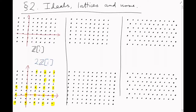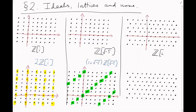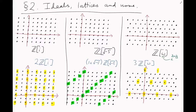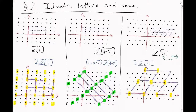Here are some pictures of ideals we've seen before, and for good measure, here's the ideal generated by 3 inside Z[ω], where ω is a complex cube root of 1. You might have noticed a very regular repeating pattern in all of these pictures. Just like our additive pictures of our rings form lattices, non-zero ideals inside these rings form sub-lattices. They may be rotated or stretched in various directions, but they're always subsets of the ring and structurally of a similar shape.